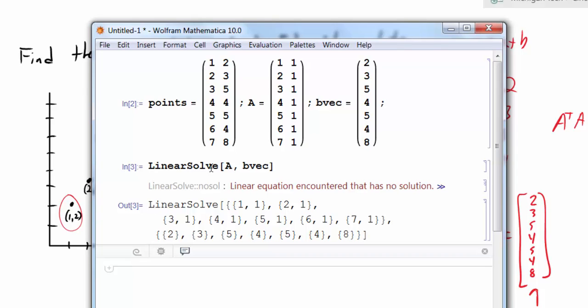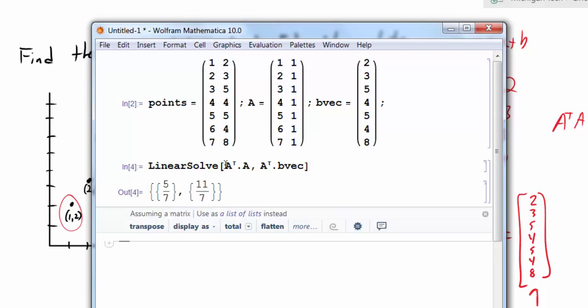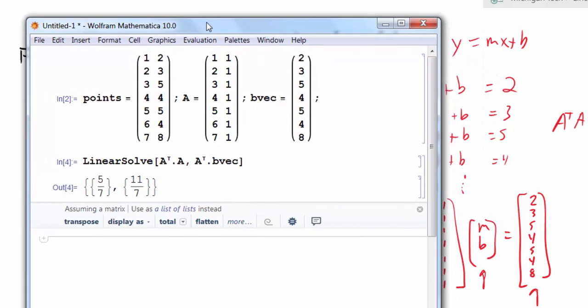So instead what I want to do is solve the least squared equation, the normal equation. Which would be a, escape, tr, escape will give me the transpose. And in Mathematica, to do matrix multiplication, I use the dot symbol. So this is a transpose a times x. And then my right hand side would be a transpose times my b vector. And sure enough, I have values here. These are the values m and b that get me closest to my b vector.